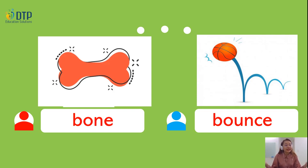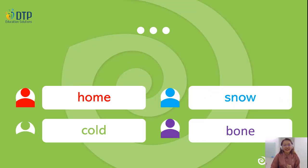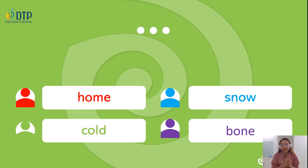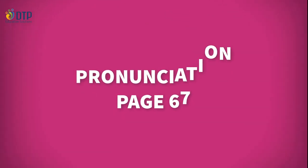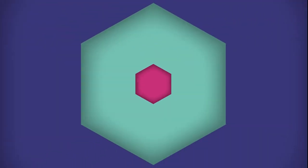Các bạn có thể cho Miss You biết những từ nào chúng ta đã đọc qua có chứa âm OW trong đó hay không? Chúng ta sẽ có những từ: 'home,' 'snow,' 'cold,' và 'bowl.' Very good. Now everybody say with Miss You again: home, snow, cold. Very good.